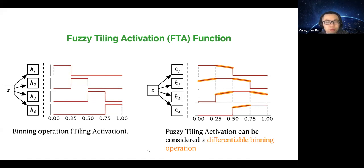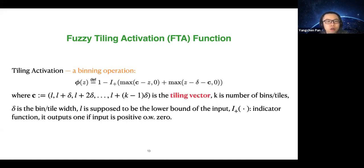To express the binning operation mathematically: the tiding vector C denotes all cutoff values — in our example, 0.25, 0.5, and 0.75. Delta is the bin width, and the subscript-plus indicator function outputs one if the input is positive, otherwise zero. For input Z = 0.3 and tiding vector C = [0.25, 0.5, 0.75], delta = 0.25: the first max operation gives [0.2, 0.45] after zeroing out negative entries. The second max operation gives [0.05, 0.0]. Summing the two maxima gives entries where only the second is zero, and applying one minus the indicator function yields [0, 1, 0, 0] as expected.